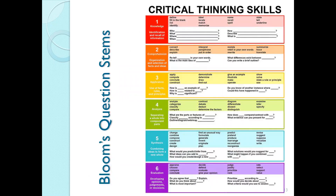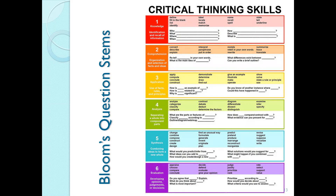Here are some great question stems aligned with Bloom's, including verbs and activities. You can do a control-print screen to save that. Look at the different question stems: who, what, when, where, why, describe — that's level one. Level six includes stems like 'Do you agree that blank? Explain your reasoning. What do you think about blank?' — these invite inference and opinion. 'Prioritize blank according to' gives them something to prioritize. Really good stuff.